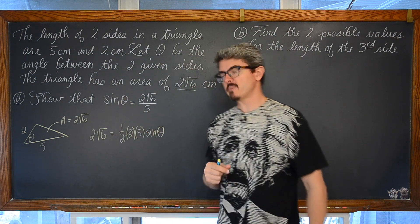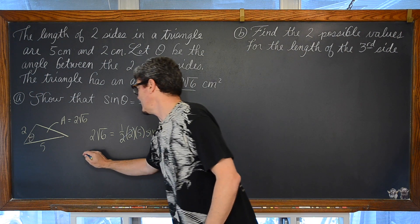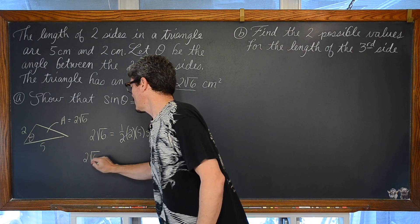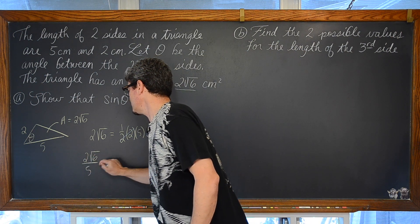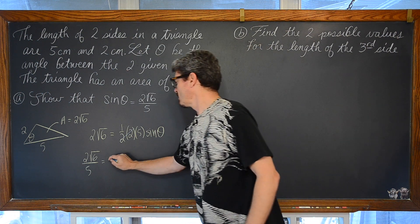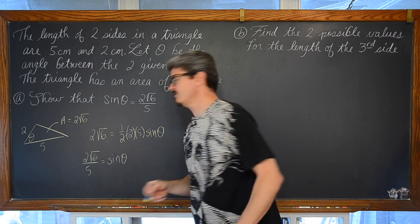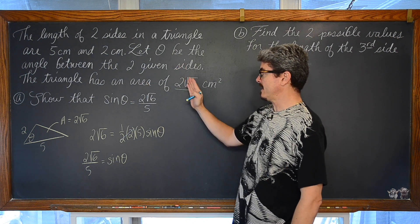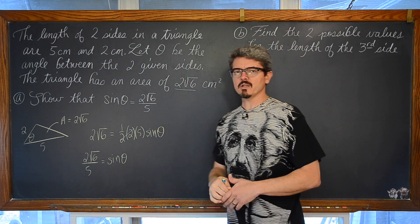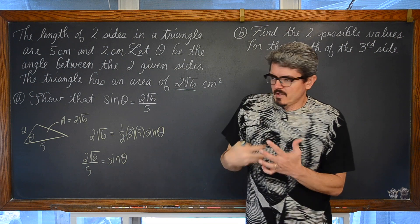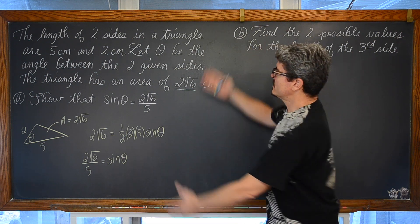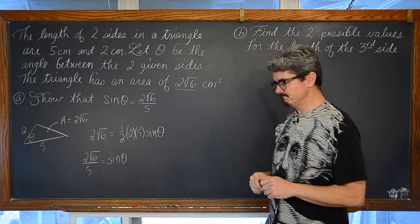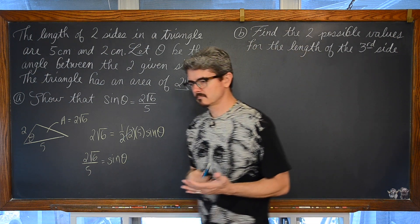We divide both sides by five and we have that two square root of six over five is indeed the ratio that we have for the sine of theta. So, the first question starts off with recognizing that you are given information about area. Go pull that formula out that is most related to the information that is given.